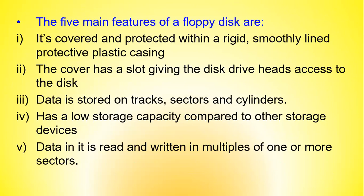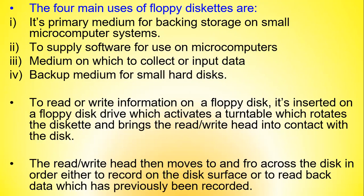The five main features of a floppy disk were: it was covered and protected within a smooth-lined plastic casing; the cover had a slot giving the disk drive head access to the disk; data was stored on tracks, sectors, and cylinders; they had low storage capacity compared to other storage devices; and data was read and written in multiples of one or more sectors. The four main uses of floppy diskettes were: as a primary medium for backing storage on small microcomputer systems; to supply software for use on microcomputers; to collect or input data; and as backup medium for small hard disks.